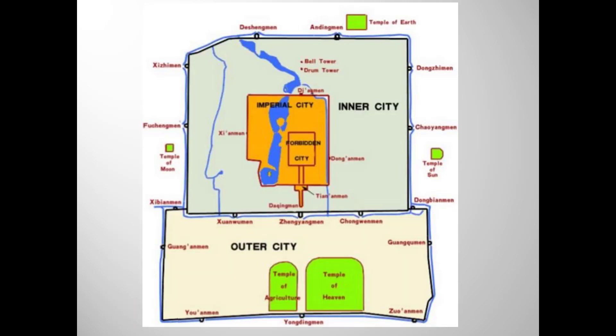Here's a map of the old city of Beijing. Note that there are three walls: the wall around the outer city, the wall around the imperial city, and the wall around the sacred heart of the city, the so-called Forbidden City, which is our required work.